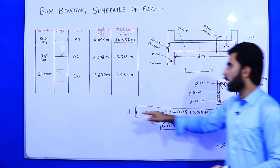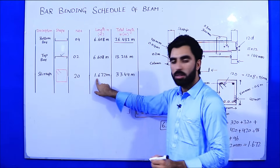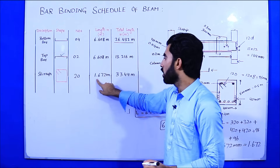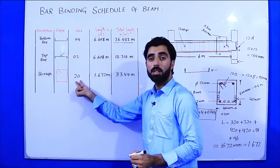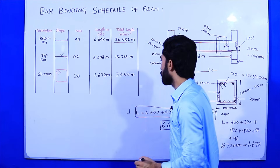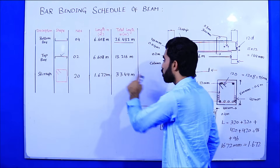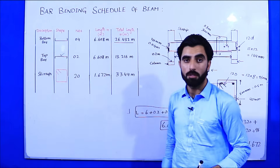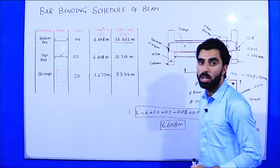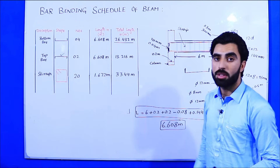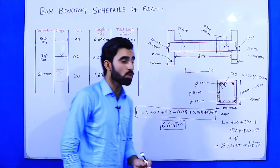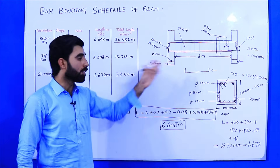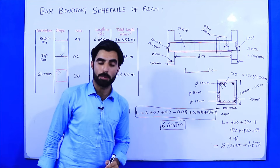The length of one stirrup is 1.672 meters and total number of stirrups is 20. So total length = 20 × 1.672 = 33.44 meters. This is the total length of stirrups used in this simply supported beam.